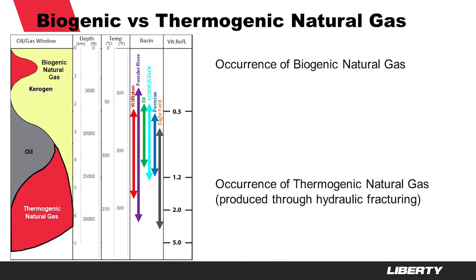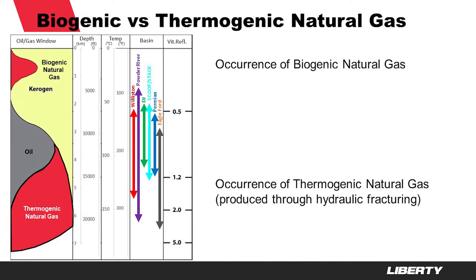The second source is thermogenic. Natural gas originated from vast quantities of mostly plankton, which was buried under many geologic layers and slowly cooked for millions of years in Mother Nature's pressure cooker to turn into oil and gas. This process requires high pressure and temperatures that exist at depths around 10,000 feet.